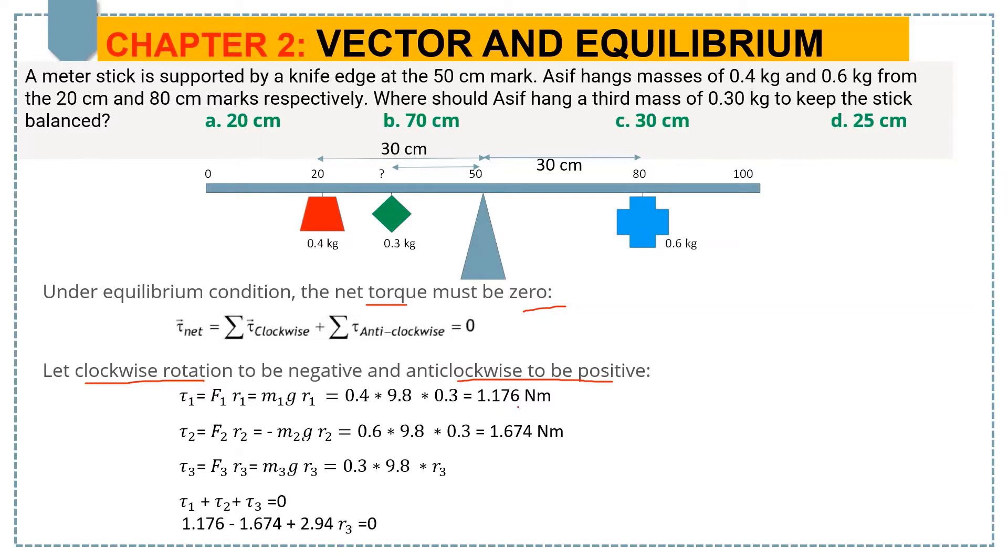Here I simply converted centimeters into meters because the unit of torque is supposed to be in newton-meter units. You can see 0.3 here because this is the distance of the 0.4 kg mass from the knife edge, which is 30 centimeters. That is the reason I have 0.3 here.